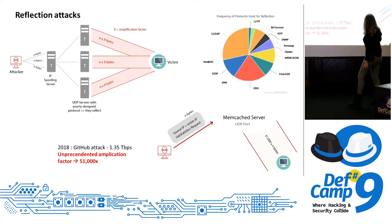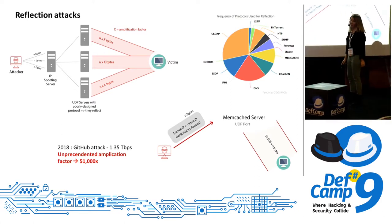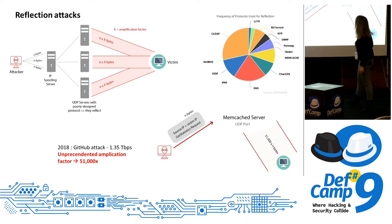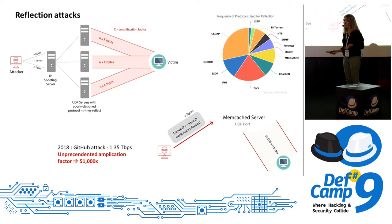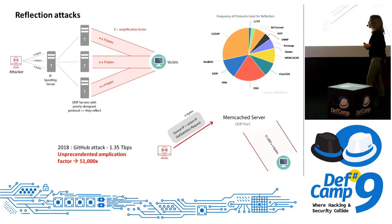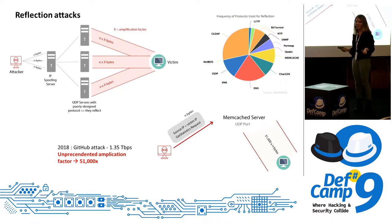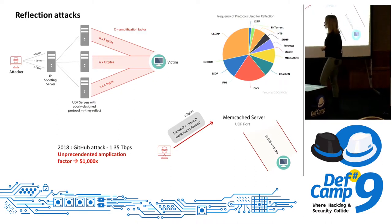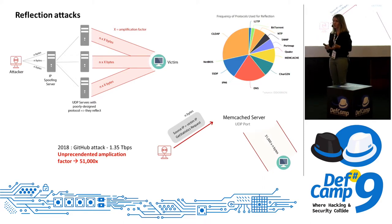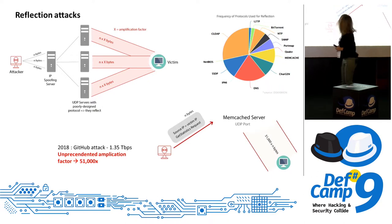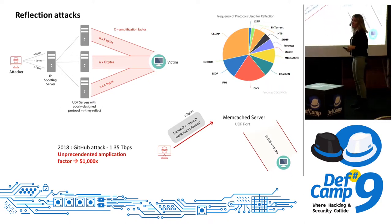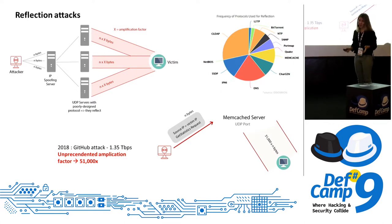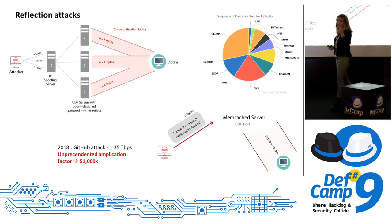Here is a chart of all the UDP protocols which can be used in reflection attacks. The most used one is connectionless LDAP — a protocol similar to Active Directory. It has only a 70x amplification factor, and the highest attack using CLDAP peaked at 24 gigabits per second. But an average website can be taken down with only a 1 gigabit per second attack. And then you have memcache with a significant portion of the pie.